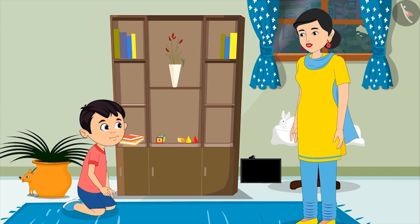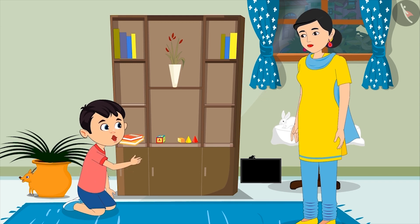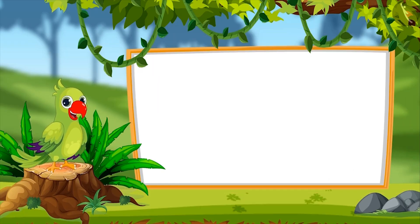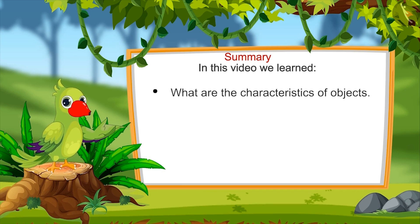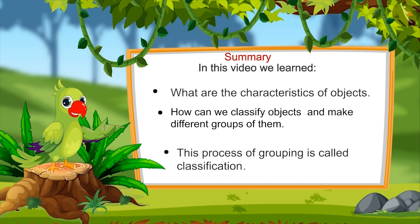Come on, it's night now and you should go to sleep quickly. Put these toys back and go to sleep. Okay mom, I had a lot of fun today — we will play again tomorrow. Sure son, now go to sleep, good night. That's all for today. In this video we have learned what are the characteristics of objects, how we can classify objects and make different groups of them, and that this process of creating different groups is called classification.